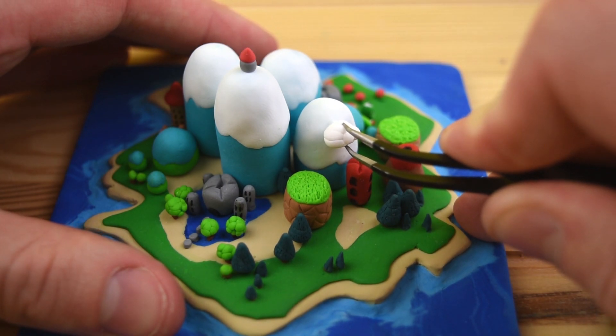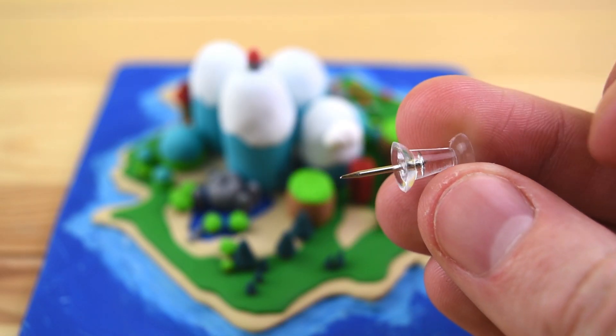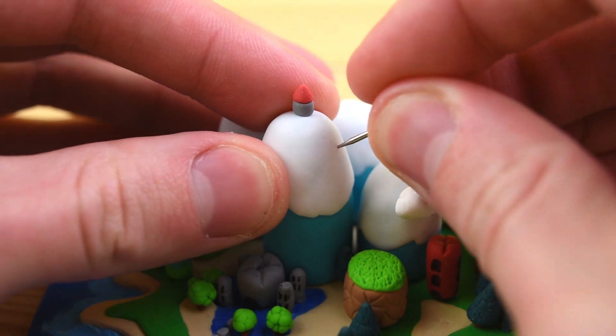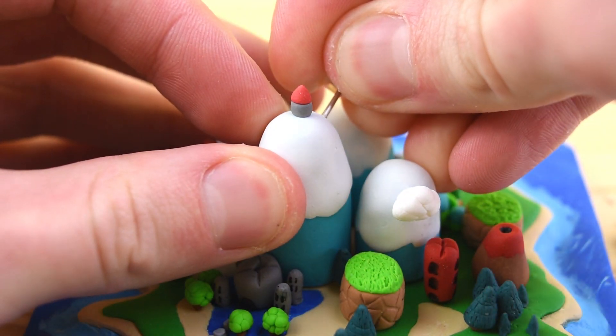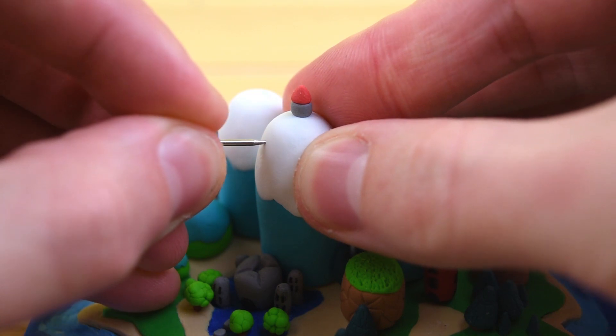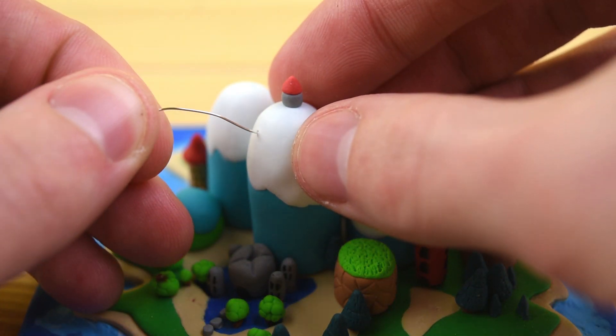Now this first cloud, which is what I was going to do with all the clouds, I just stuck on the side of the mountain. But I feel like it didn't look very good for these ones on top, so we're going to create some holes using this thumbtack and we'll stick this very thin wire inside of there.